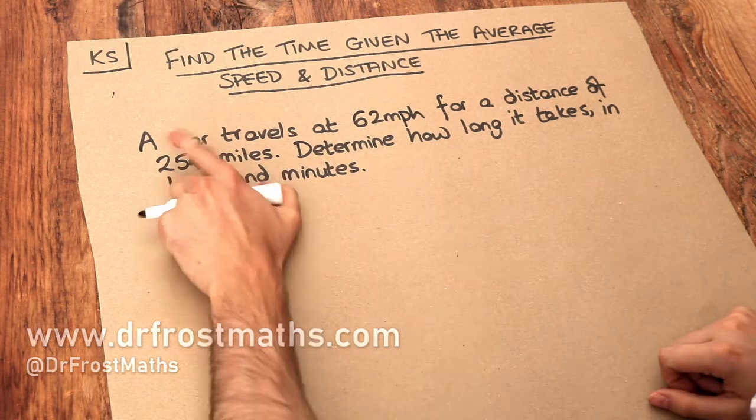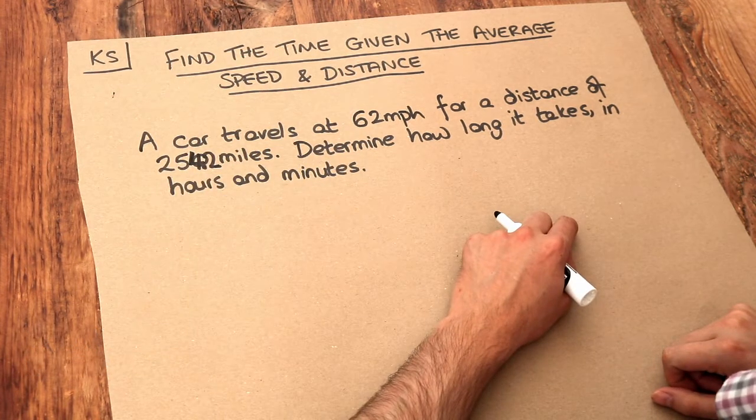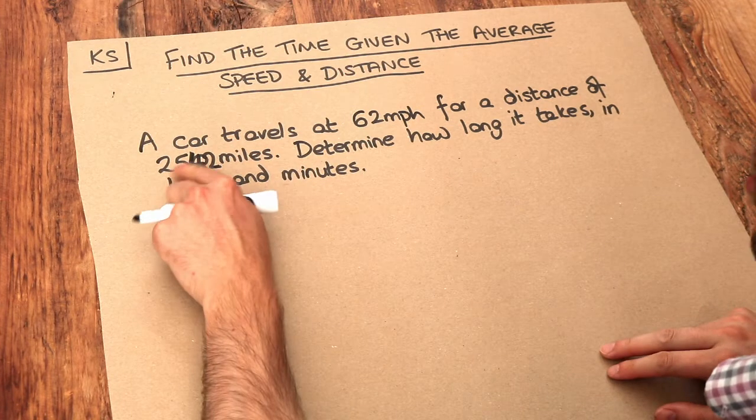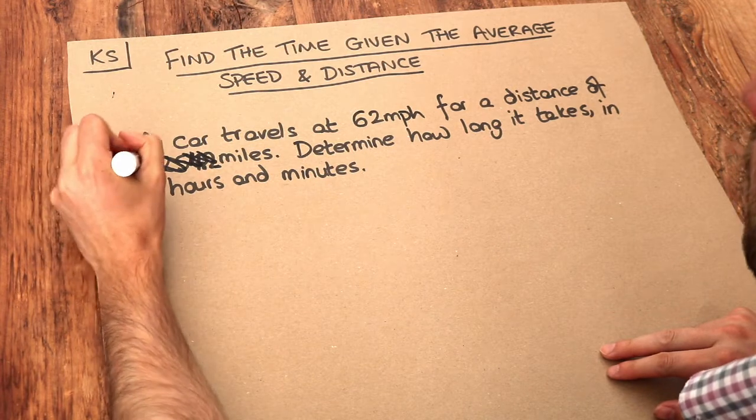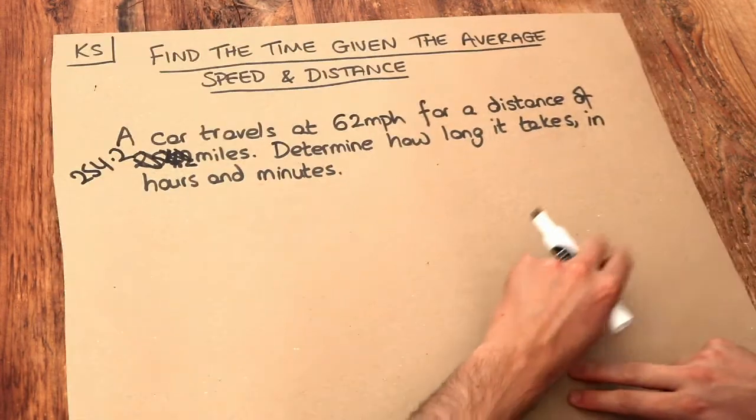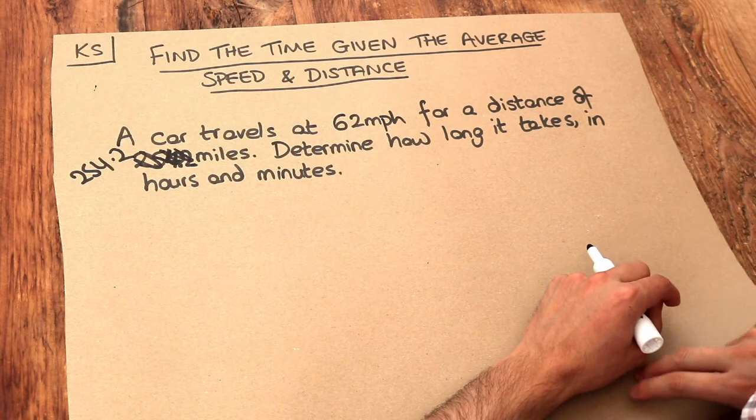We have this problem here. A car travels at 62 miles per hour for a distance of 254.2 miles. Let me just make that clearer. Determine how long it takes in hours and minutes.